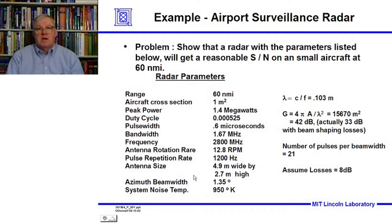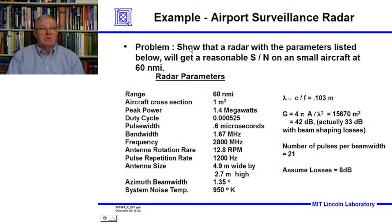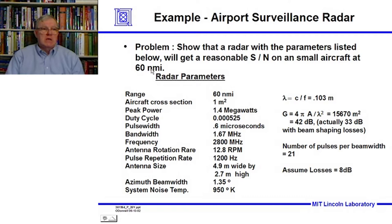Let's look at one example and work through the radar range equation carefully, so you can get an idea of how we deal with it and do the algebra. The problem is: show that a radar with the listed parameters will get a reasonable signal-to-noise ratio on a small aircraft at a 60-mile range. This radar resembles airport surveillance radars (ASRs), and a small aircraft — like a Piper Cherokee — typically has a radar cross-section of about one meter squared.